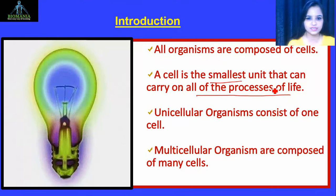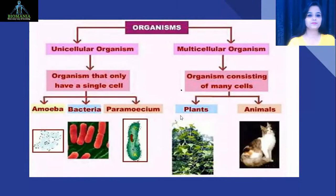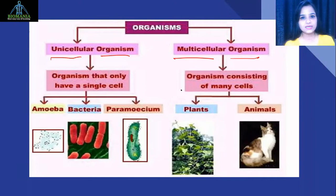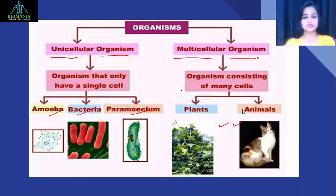Cells are divided into two parts: unicellular and multicellular. Uni means one — unicellular organisms are made from only a single cell. Multi means many — multicellular organisms are made up of many cells. Examples of unicellular organisms include amoeba, bacteria, and paramecium. We humans are the best example of multicellular organisms, along with plants and many others.